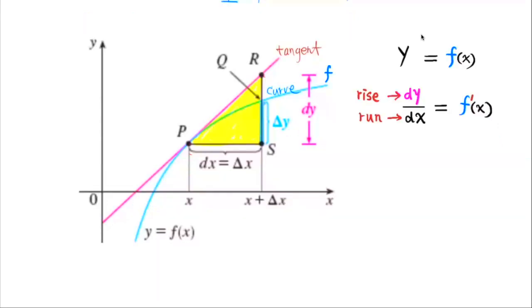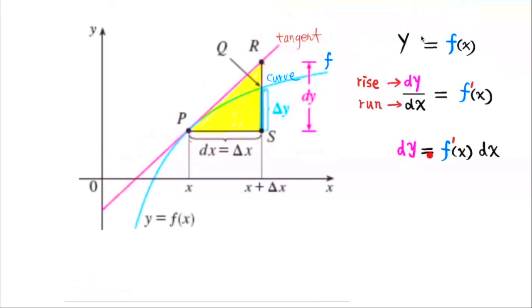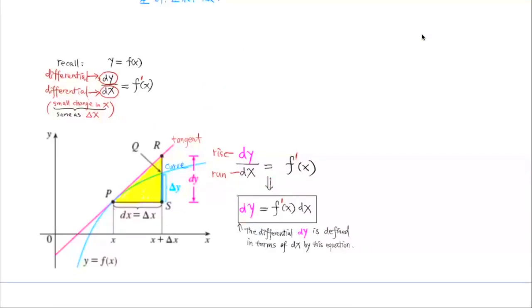So today, we can regard this dy and dx here as differentials. And we can solve for dy by multiplying both sides of this equation by this differential dx. So we have dy is equal to f prime of x times the differential dx. So the differential dy is defined in terms of dx by this equation.